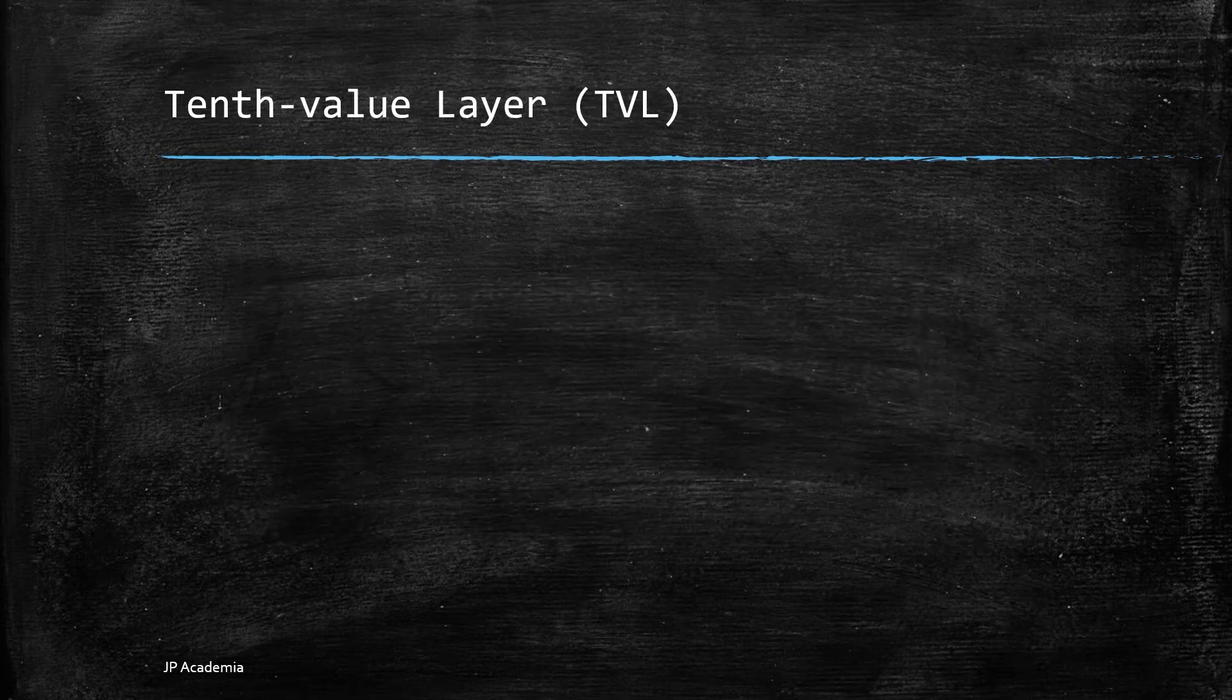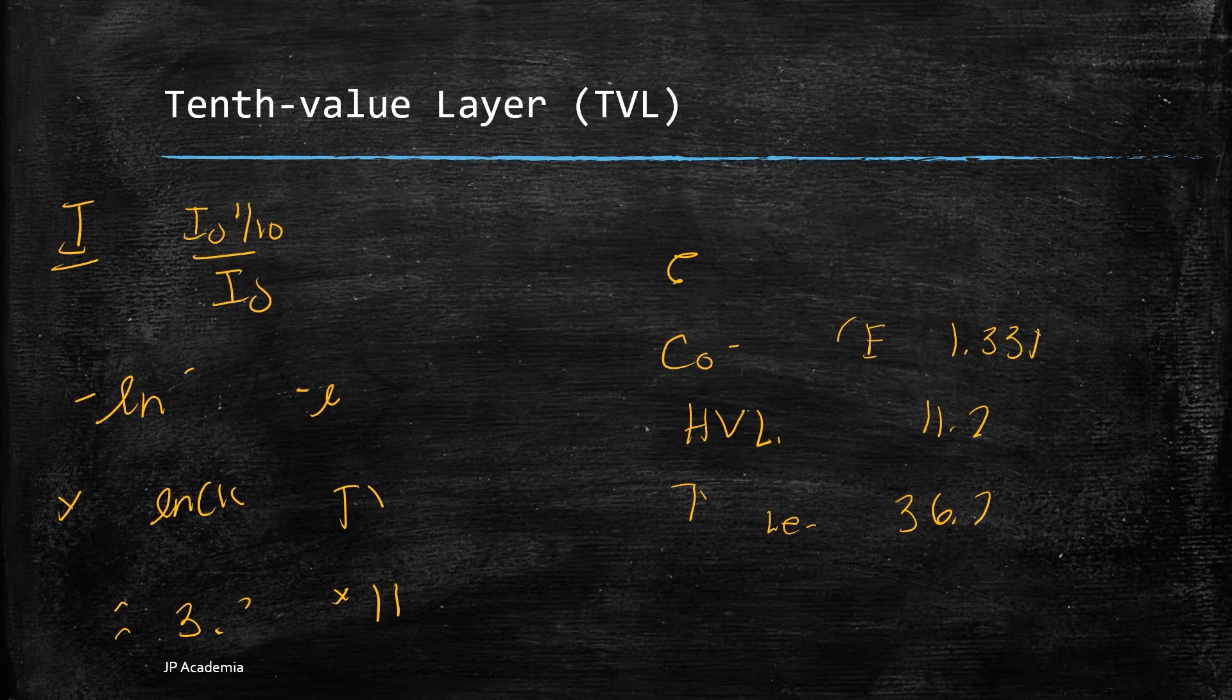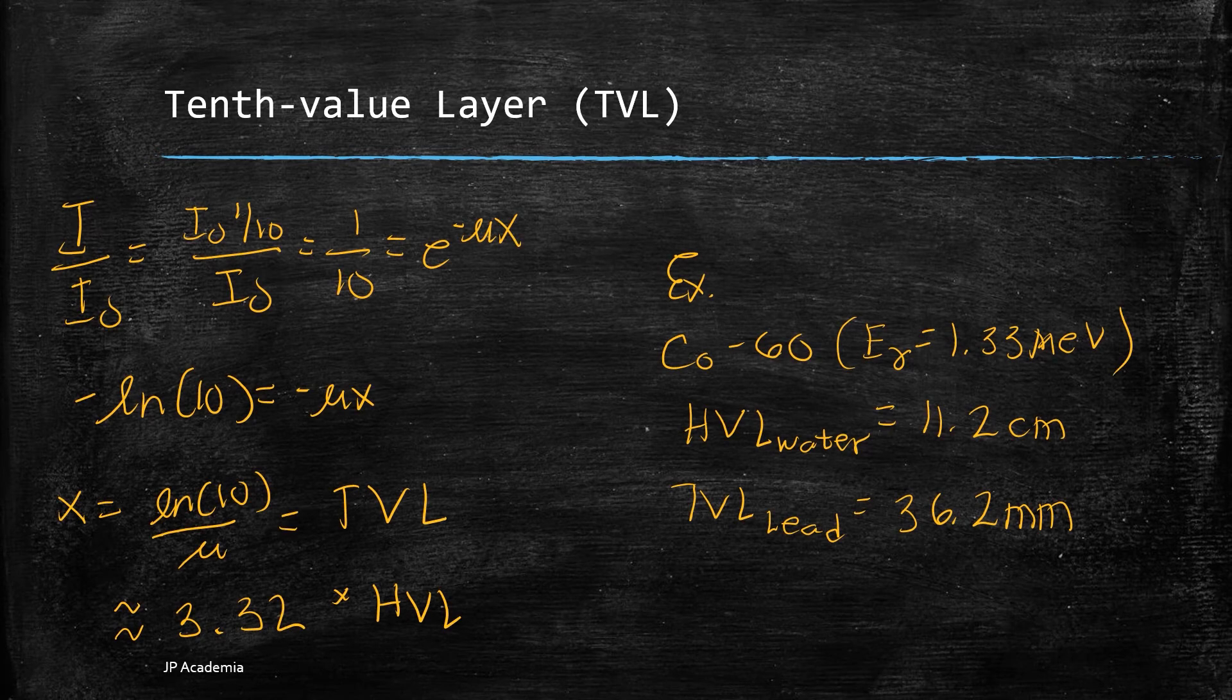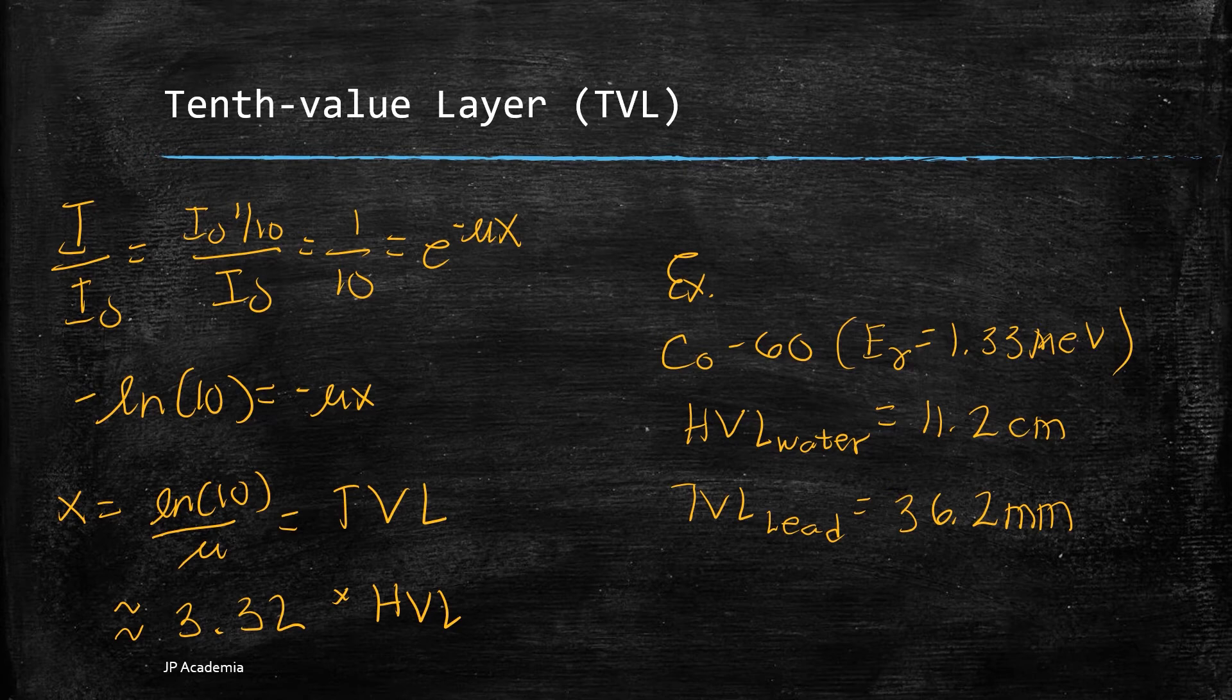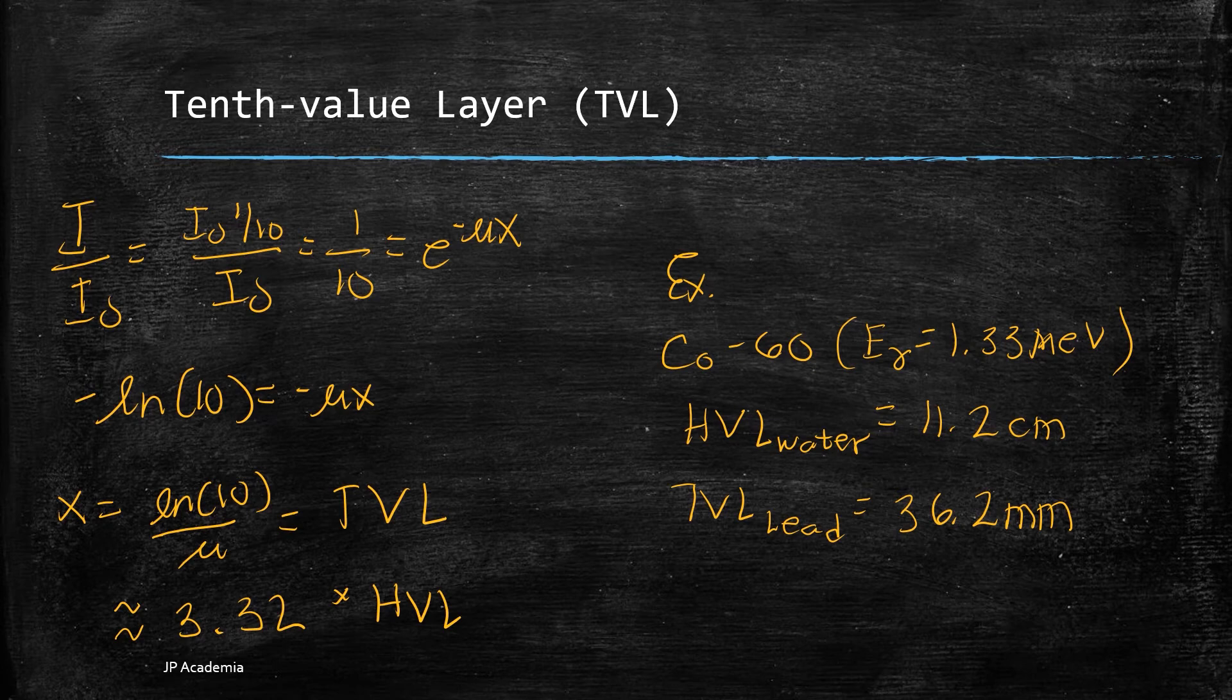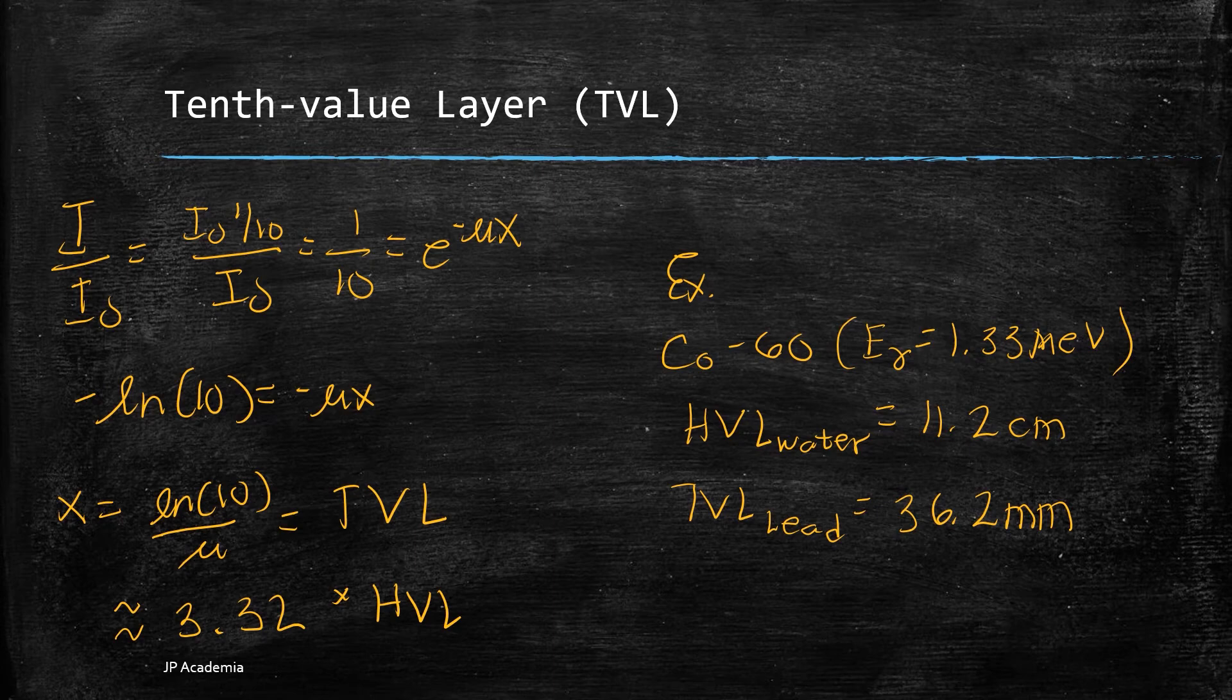Some radiation shielding problems require the use of thick absorbers. Thus we will define here tenth value layer also known as the tenth value thickness or TVT or TVL. It is the absorber thickness to decrease the transmitted beam intensity by a factor of 10. I have one example under the narrow beam conditions. For cobalt-60 source with average photon energy of about 1.33 mega electron volts, the HVL for water is 11.2 cm and the TVL in lead is about 36.2 millimeters mainly for shielding purposes.